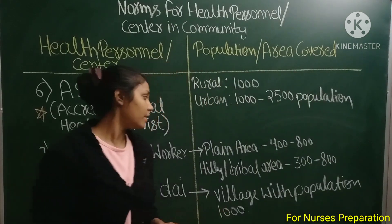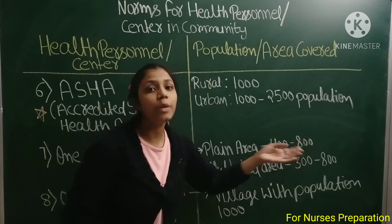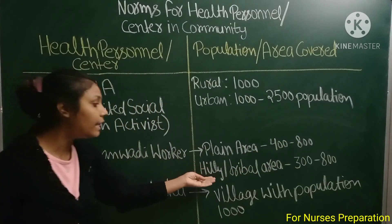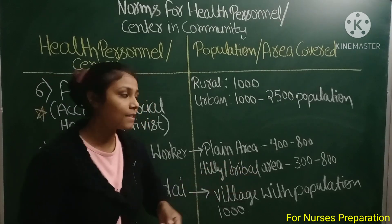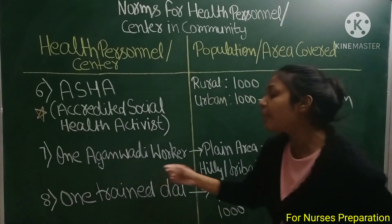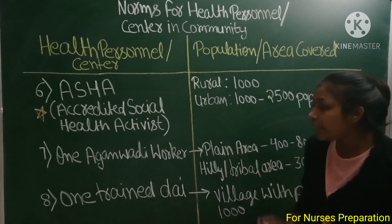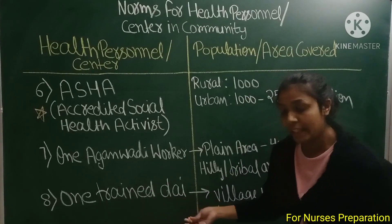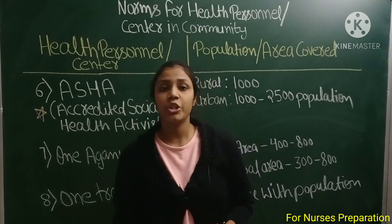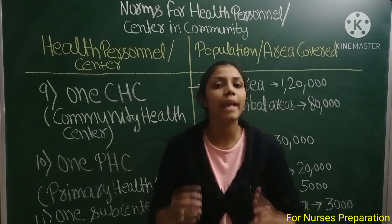Next is आंगनवाड़ी worker. One आंगनवाड़ी worker plain area में 400 से 800 की population पर appoint किया जाता है, वहीं hilly या tribal areas में 300 से 800 की population में एक आंगनवाड़ी worker को appoint किया जाता है. वहीं one train-dai, village area की 1000 population पर एक train-dai को appoint किया जाता है.